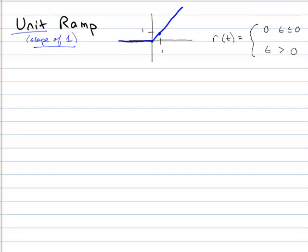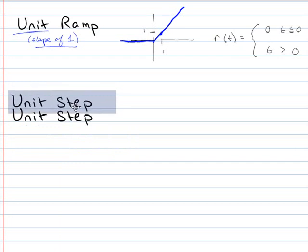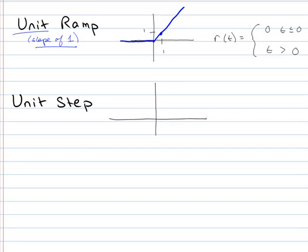Now, next thing we can do is we can look at something that we call the unit step. To get the unit step, we're going to take the derivative of the unit ramp. So let's look at how you would take the derivative of this function.